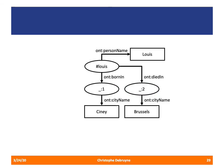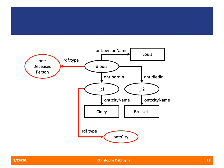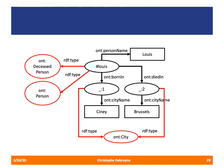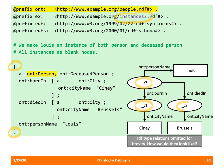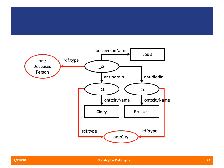Blank node identifiers are generated internally by computer-based agents, and you cannot make assumptions about how they'll look. Graphically, the RDF graph still shows four RDF type relationships. A third example also uses a blank node for Louis himself — he is a person and a deceased person but has no URI — resulting in three blank nodes total, with the agent generating three internal blank node identifiers. Graphically, nothing changes: there are still four RDF type relationships declared.